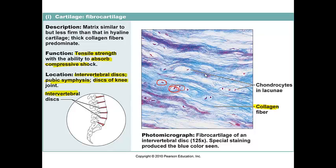As a summary: the appearance of a chondrocyte tells you that you are not looking at one of the six examples of connective tissue proper — you know it has to be one of the three different types of cartilage.